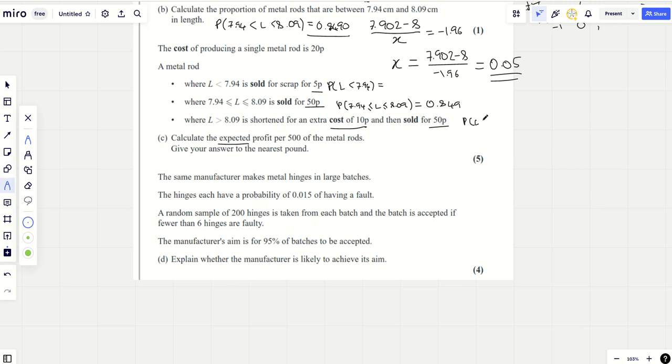I'll work out this one. The probability that L is greater than 8.09. Actually I'll just do less than 7.94 and then take them both away from 1. I'm just going to do that very quickly on my calculator. Normal CD, lower is minus 1000, upper is 7.94, sigma is 0.05, and mu is 8. I'm getting 0.115 for that. And now I know this one by implication because it's either this or this or this. So I can just do 1 minus those two answers for the other one. 1 minus 0.849 minus 0.115, this is going to be 0.036.